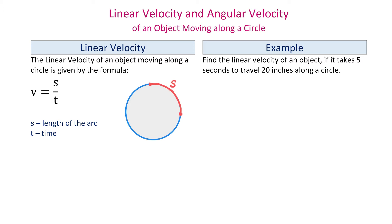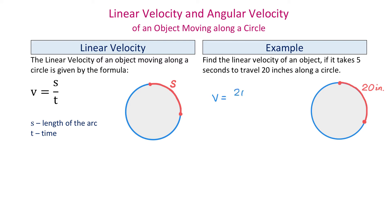In this example, we will find the linear velocity of an object that takes 5 seconds to travel 20 inches along a circle. Here we have the circle and the object travels from this point to this point, a distance of 20 inches. The linear velocity v equals 20 inches divided by 5 seconds, which gives us 4 inches per second. So every second the object travels 4 inches.